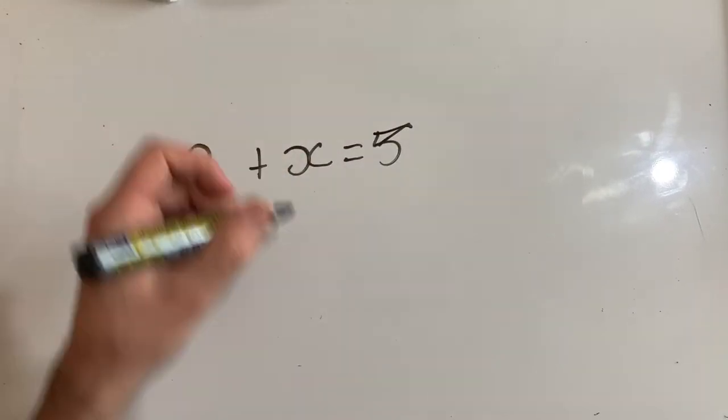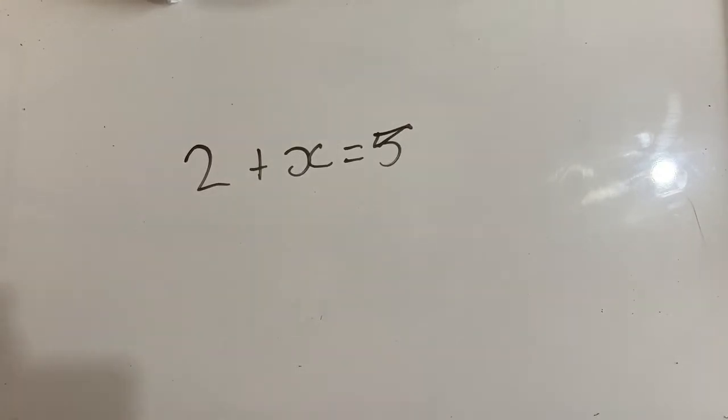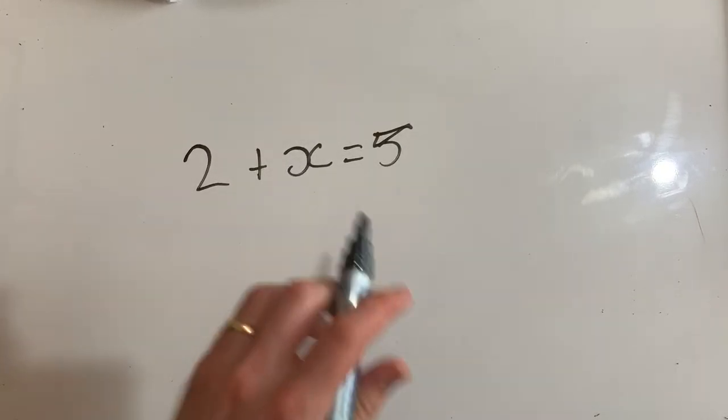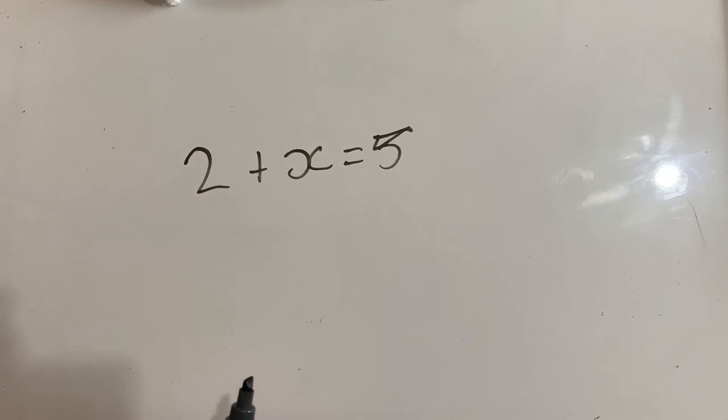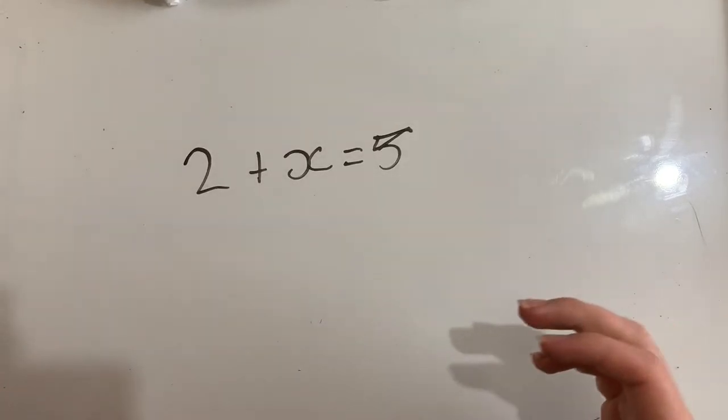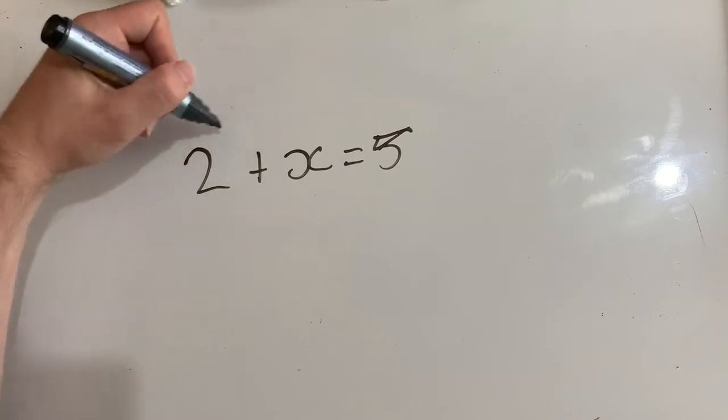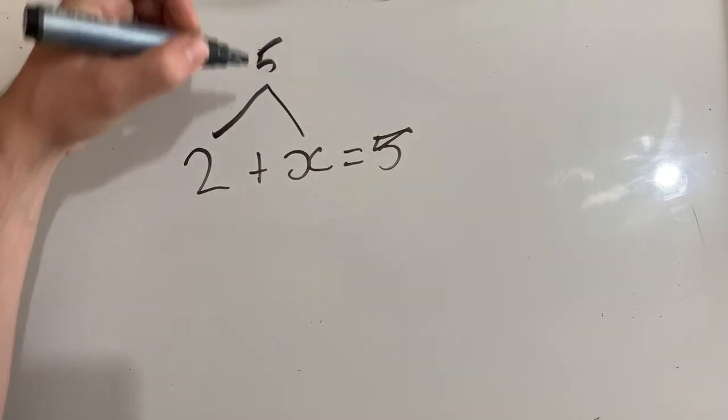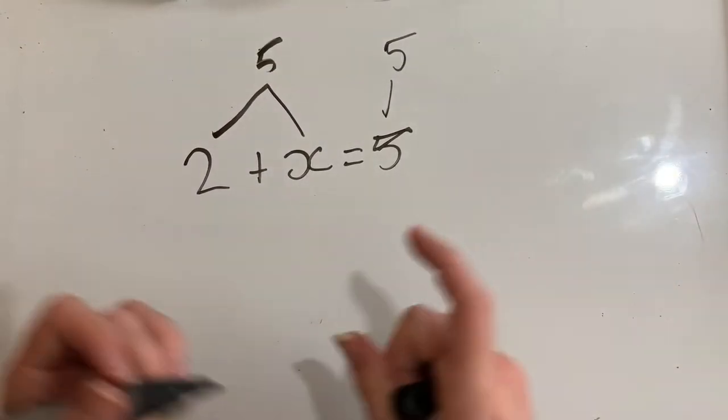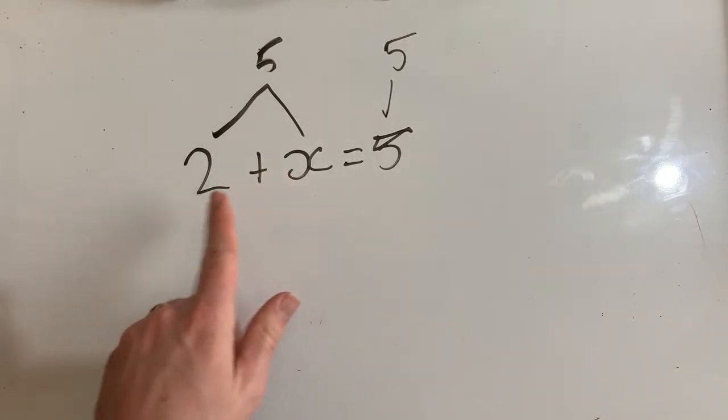So we have got 2 plus x equals 5. Now x just means a number that we don't know what it is yet. So we kind of just put something there in its place. We will find out what that is a little bit later. Now how are we going to solve this? I want to know what x is. Well I know that equations mean the same on both sides. So these two numbers together will be 5. And 5 of course is 5. So I need to know what I need to do to 2 to get to 5.